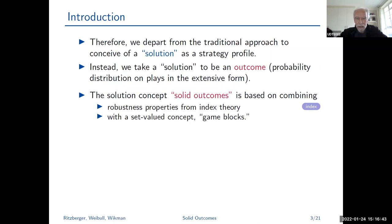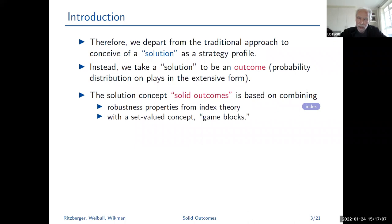This means we may not be able to exactly say how a particular outcome is supported off equilibrium. There could be multiple ways in which it is supported, but what we really care about is what happens in the end — which terminal nodes we reach with positive probability. This is the solution concept we propose: it's called solid outcomes, and it's based on combining two things — robustness properties that come from index theory, and a set-valued concept which we call game blocks.